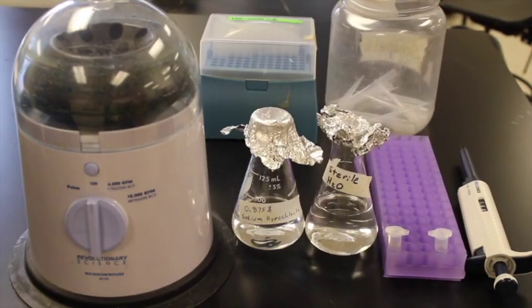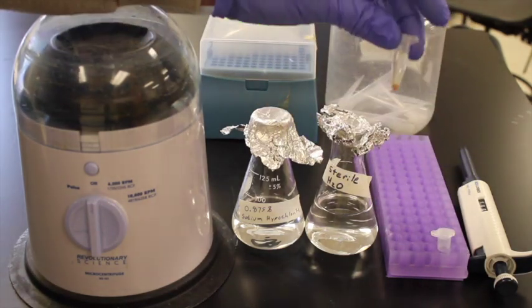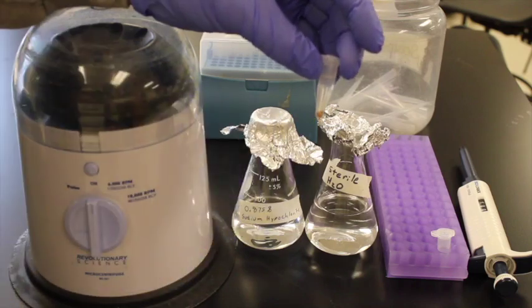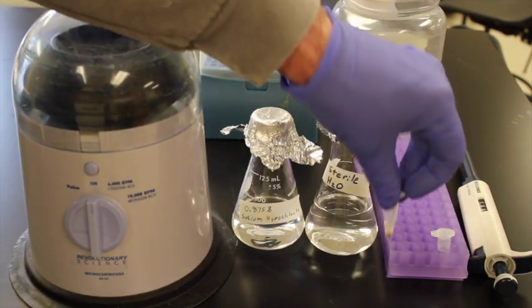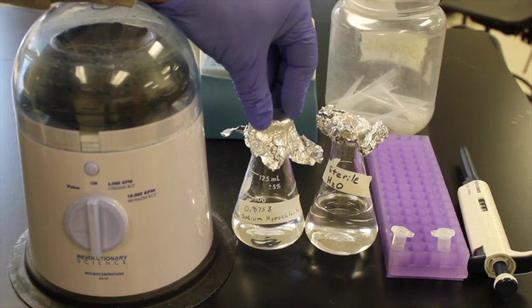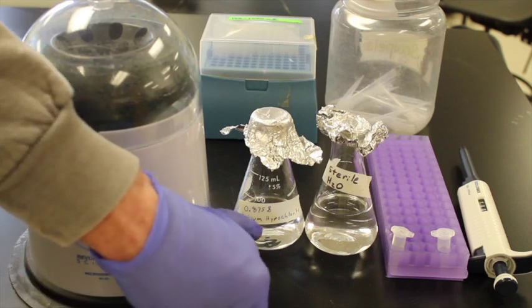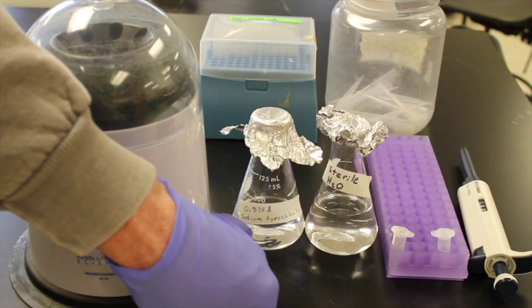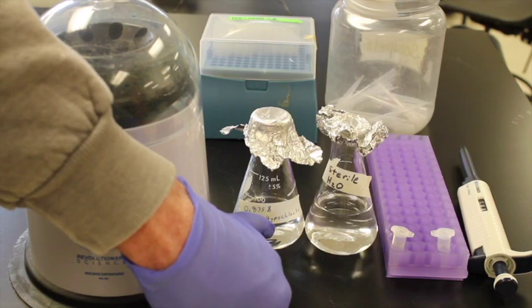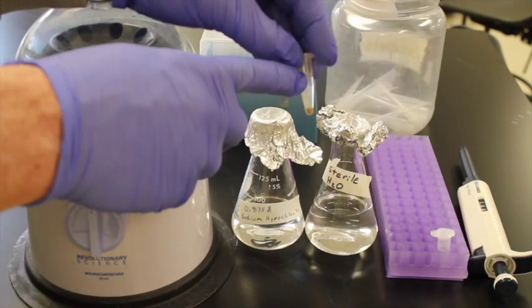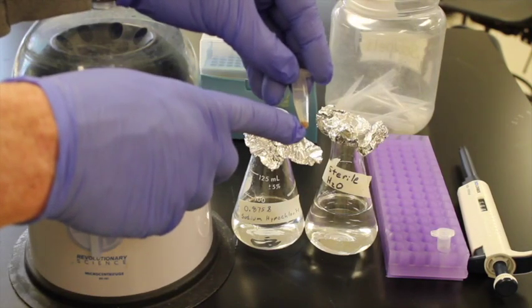The next step is to sterilize the spores. So I've waited 15 minutes. Here are my spores. They've fully imbibed the water so they're all ready to go and ready to be sterilized. What I've made up in the meantime is a solution of 0.875% sodium hypochlorite. Sodium hypochlorite is bleach. So I basically took bleach that you get from the normal store, made up a 0.875% solution.